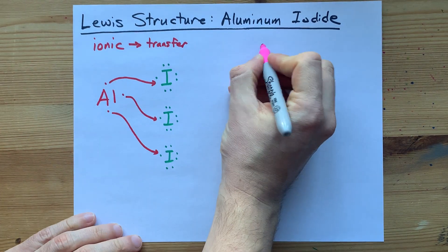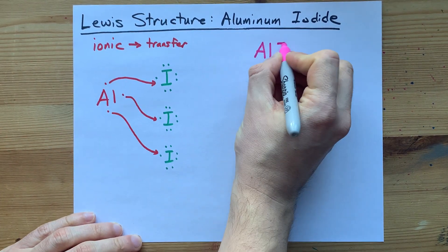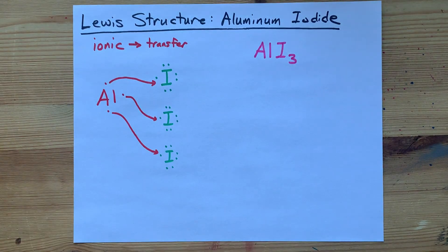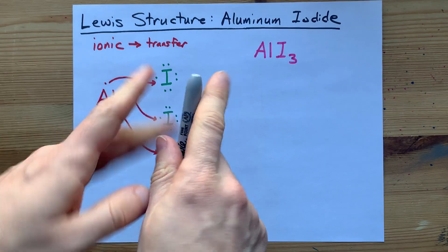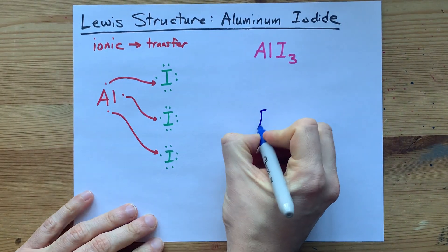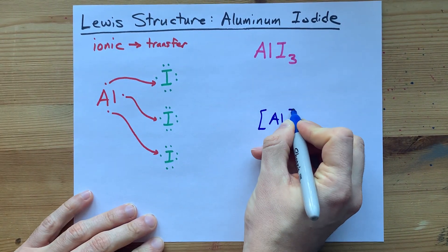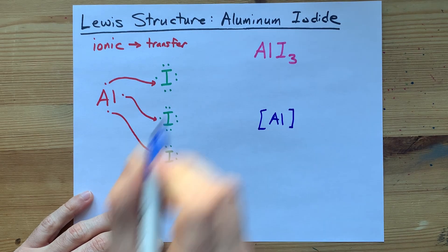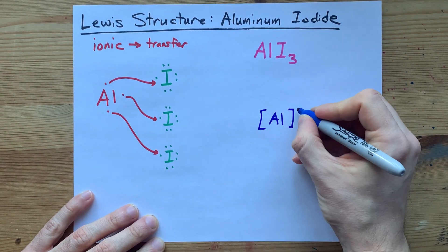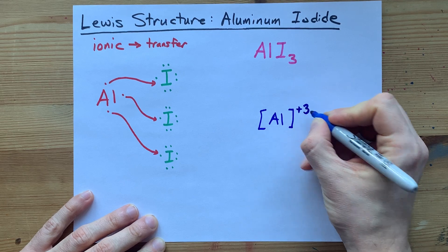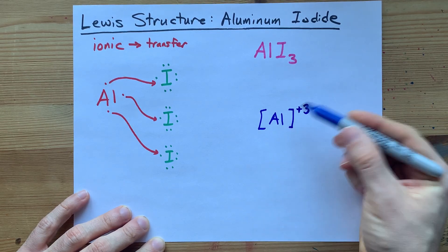One aluminum gave away its electrons to three iodines, which is why the formula is AlI3. But let's finish this off by drawing the completed Lewis structure. We have an aluminum atom with no valence electrons anymore, or at least no electrons in that what was its outer shell. And it gave away three of them, so its charge is plus three.